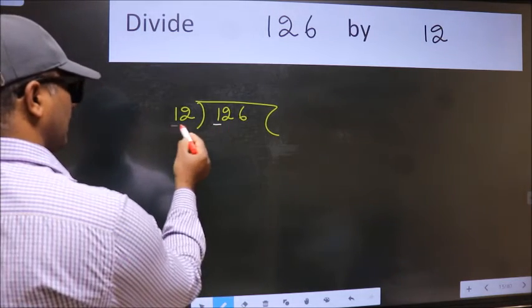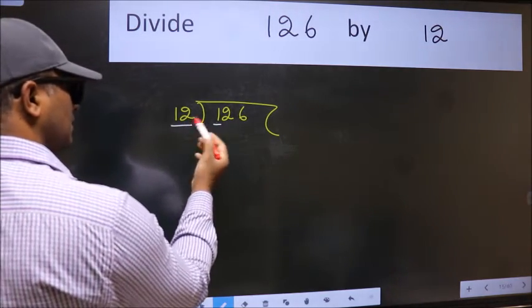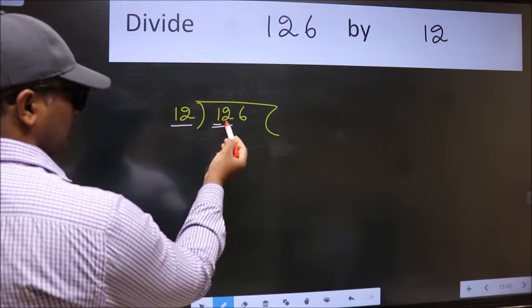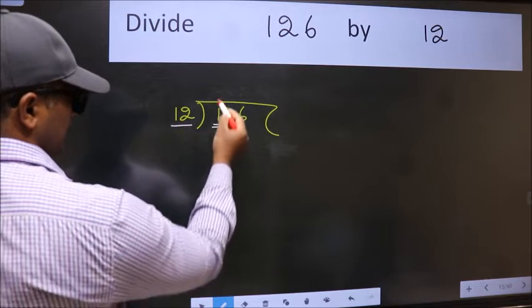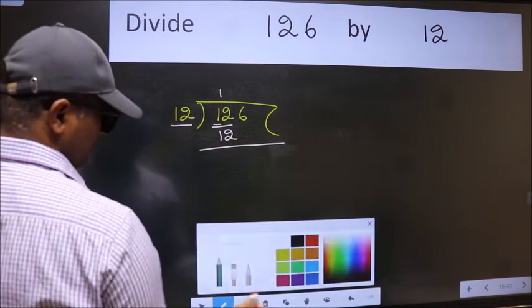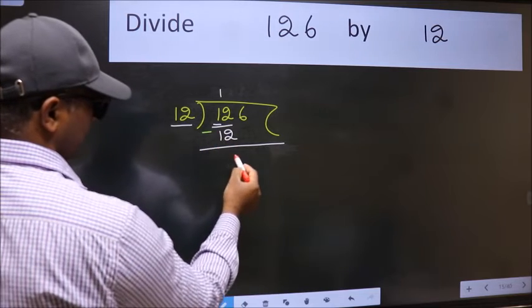126, 1 and here 12. 1 is smaller than 12, so take two numbers, 12. When do we get 12 in 12 table? 12 ones, 12. Now we should subtract. We get 0.